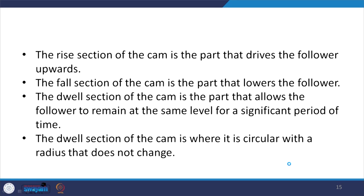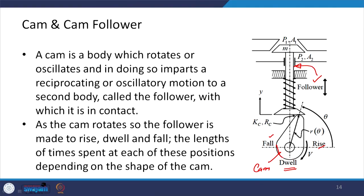The rise section of the cam drives the follower upward; the fall section lowers the follower; and the dwell section allows the follower to remain at the same level for a significant period. The dwell section is where the cam is circular with a radius that does not change.